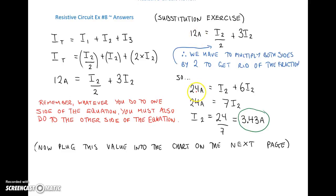That way we'll just end up with the second current. So 12 times 2 is 24. Half of I2 times 2 gives me I2. And 3 times I2 times 2 gives me 6 times the second current. So now we've got 24 amps is equal to the second current plus 6 times the second current. Well, that means that 24 amps is equal to 7 times the second current. And now in order to eliminate the 7, I've got to divide by 7. Whatever I do to one side, I've got to do to the other. So divide by 7 gives me I2. And then 24 divided by 7 gives me 3.43 amps.